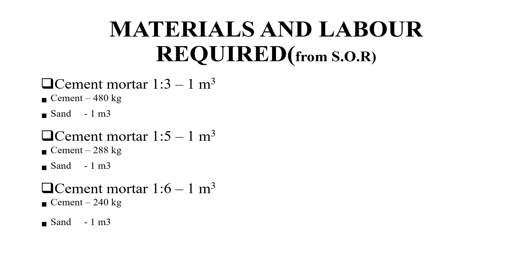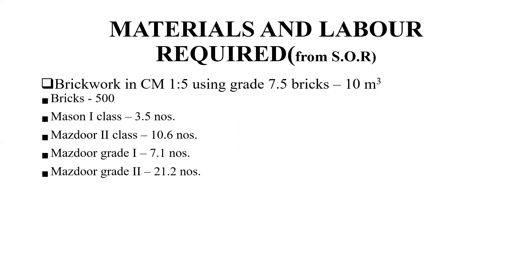For cement mortar 1:2, for one meter cube, cement required is 480 kg and sand is one meter cube. For cement mortar 1:5, cement required is 288 kg. For cement mortar 1:6, cement required is 240 kg.